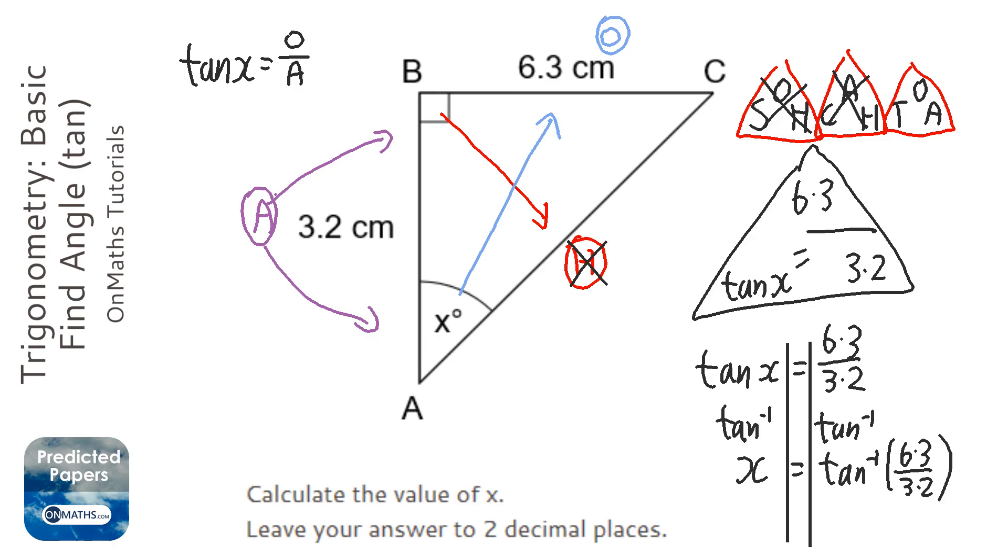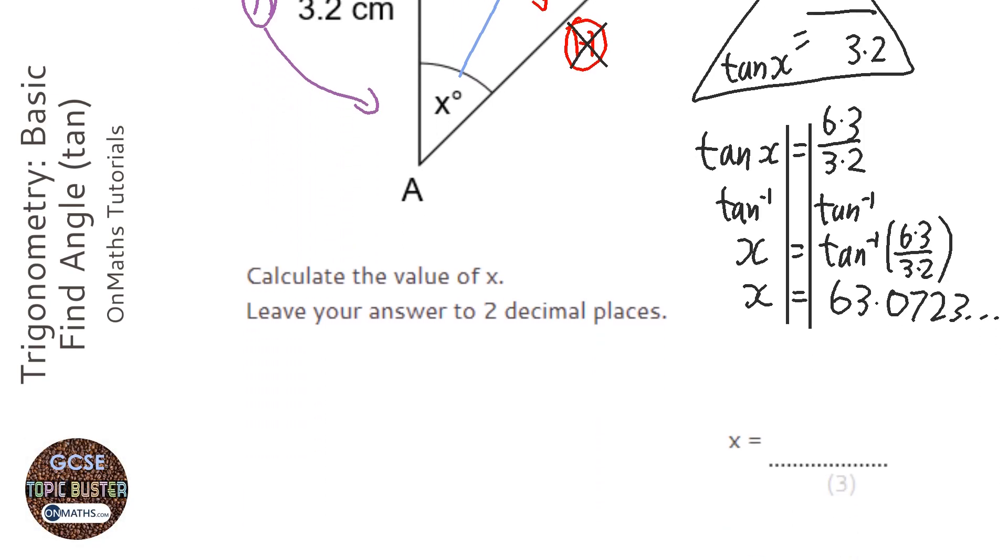Enter 6.3 divided by 3.2 and close the bracket. X equals 63.0723... The question asks for 2 decimal places, so the answer is 63.07 degrees.